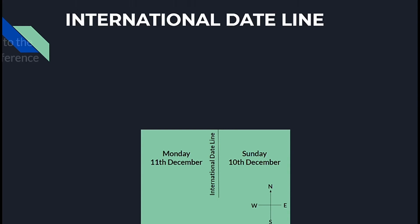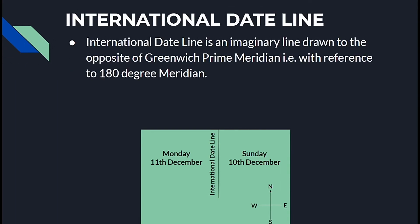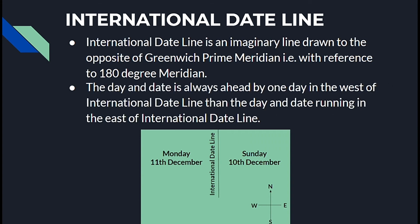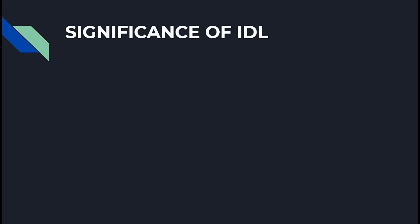The International Date Line is an imaginary line drawn opposite to the Greenwich prime meridian, with reference to the 180 degree meridian. The day and date is always ahead by one day in the west of the International Date Line compared to the day and date in the east of the International Date Line.